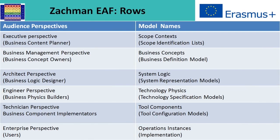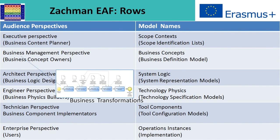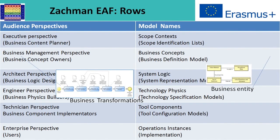There is an executive perspective, business management perspective, architect perspective, engineer perspective, technician perspective, and an enterprise perspective as a whole. Each perspective has specific model names: scope context for the executive perspective, system logic for the architect perspective, and tool components for the technician perspective. Our business process model will be placed in the business management perspective, and our data model also goes there — confirming there is a clear place for our EA artifacts in ZACHMAN.